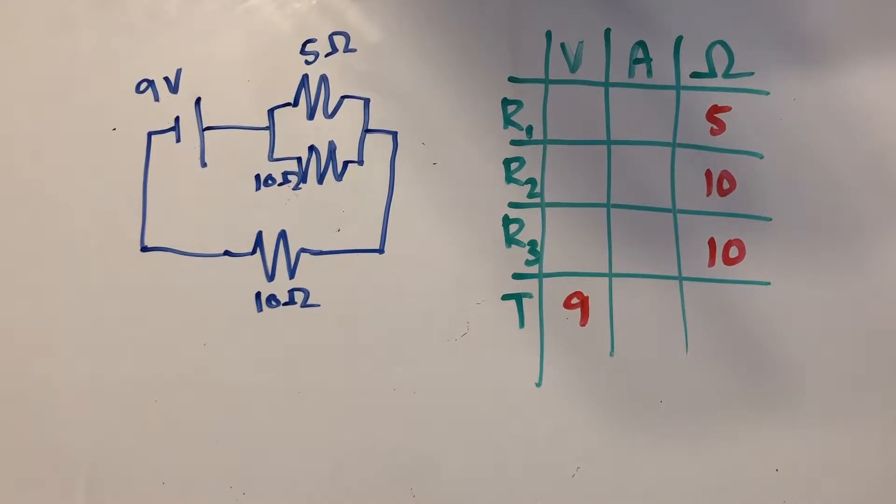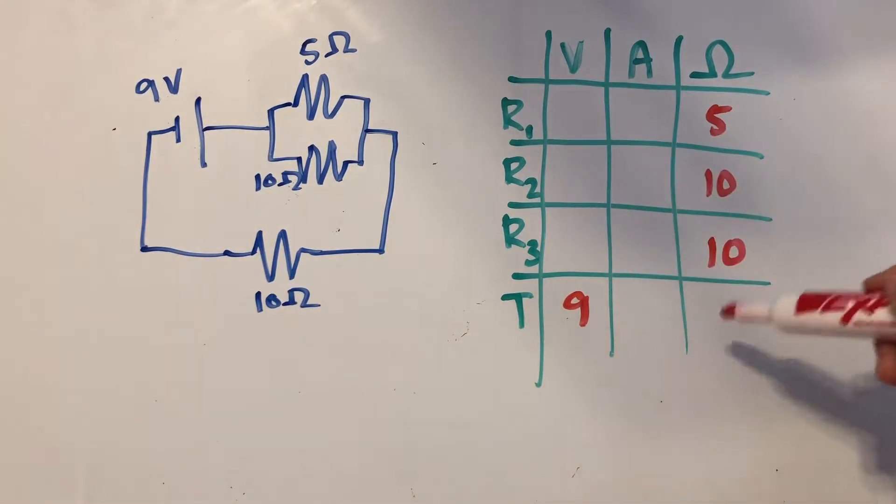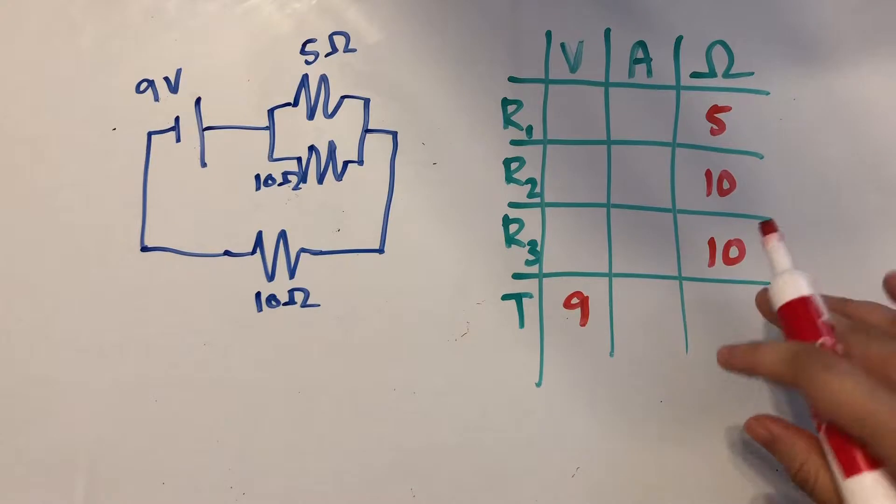Here I've got a circuit for you with a couple of given values, and over here we have a table. I've gone and filled in all the known values. So our goal for this video today is to find all the unknown values and fill this table in completely.